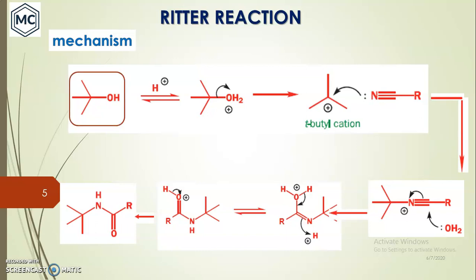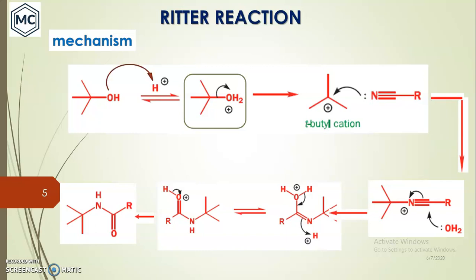First, the alcohol reacts with acid. The hydroxyl group gets protonated. We have to remember there is a nitrile in the system, but the nitrile cannot react with the acid because nitrile is weakly basic. So before protonating the weakly basic nitrile, the alcohol gets protonated and becomes a hydronium species.